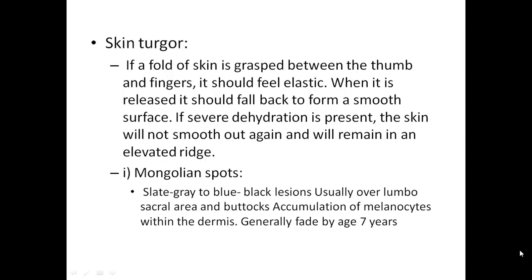Skin turgor: if a fold of skin is grasped between the thumb and fingers, it should feel elastic. When released, it should fold back to form a smooth surface. If severe dehydration is present, the skin will not smooth out and will remain as an elevated ridge. Mongolian spot is a slate gray to blue-black lesion usually over the lumbosacral area and buttocks, representing an accumulation of melanocytes within the dermis, and generally fades by 7 years of age.